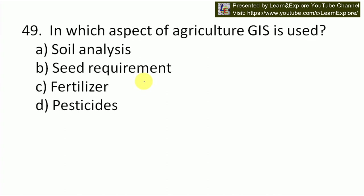Next question: in which aspect of agriculture is GIS used? Options are soil analysis, seed requirement, fertilizer, or pesticides. Our answer will be A — soil analysis. GIS is used in agriculture for soil analysis.